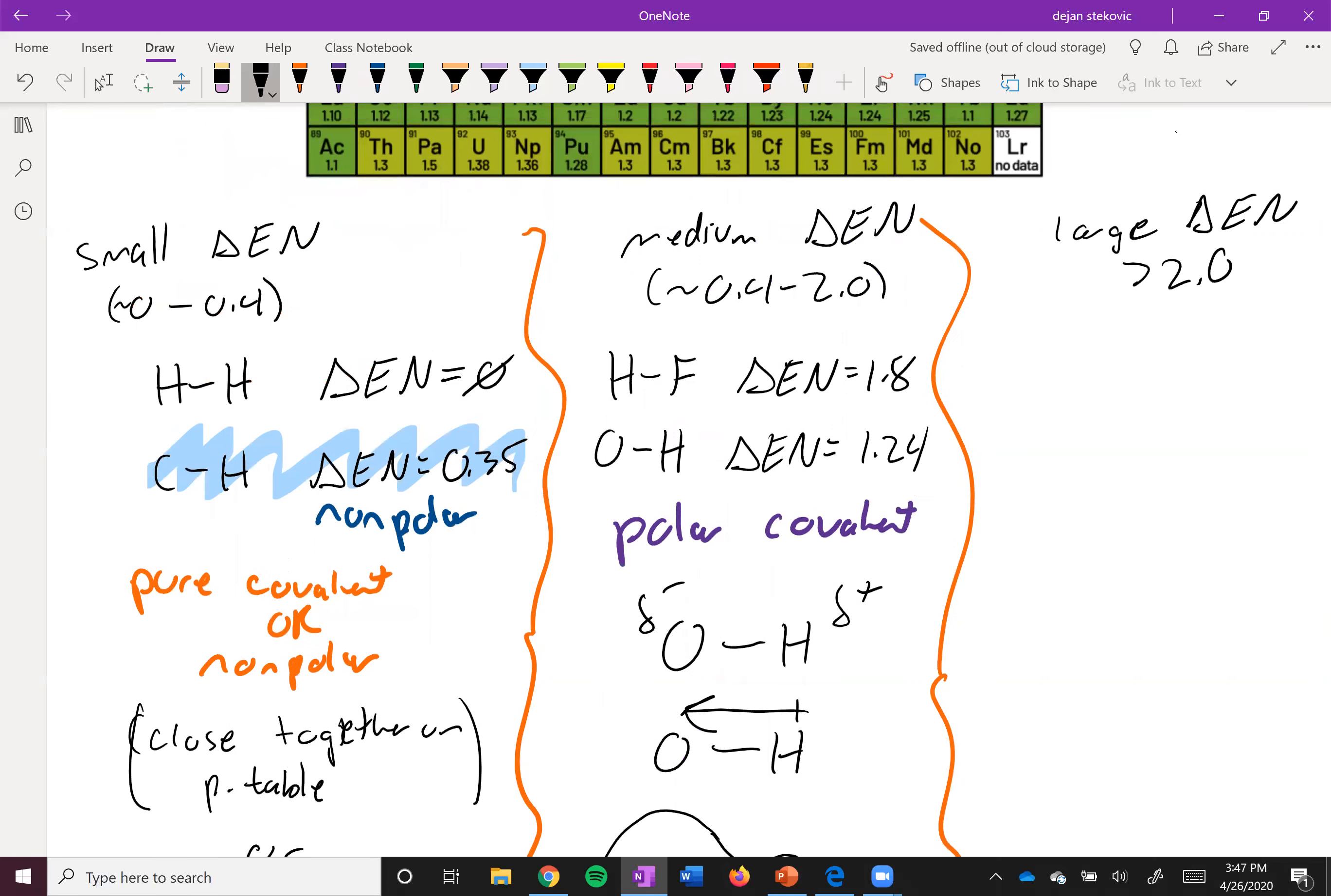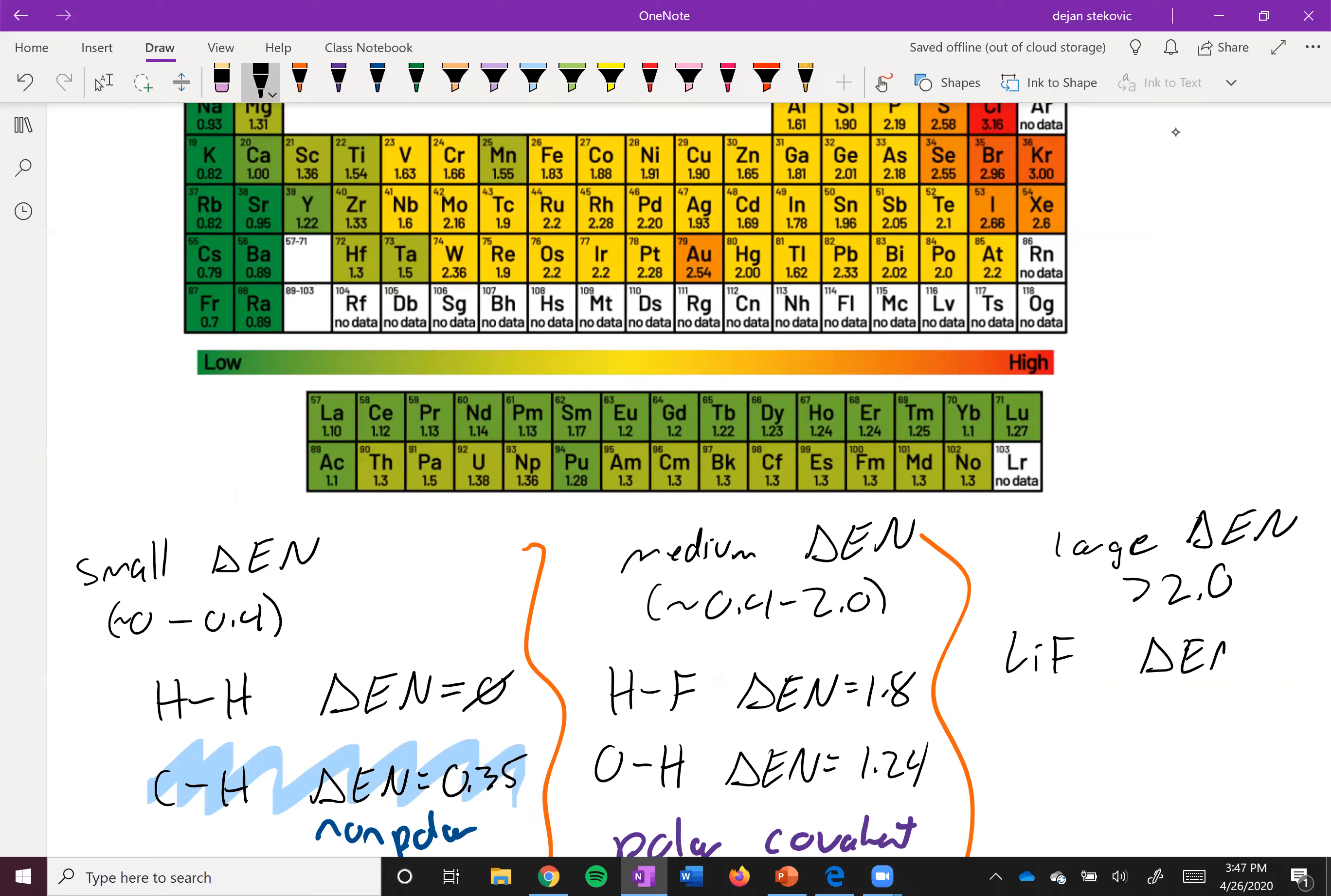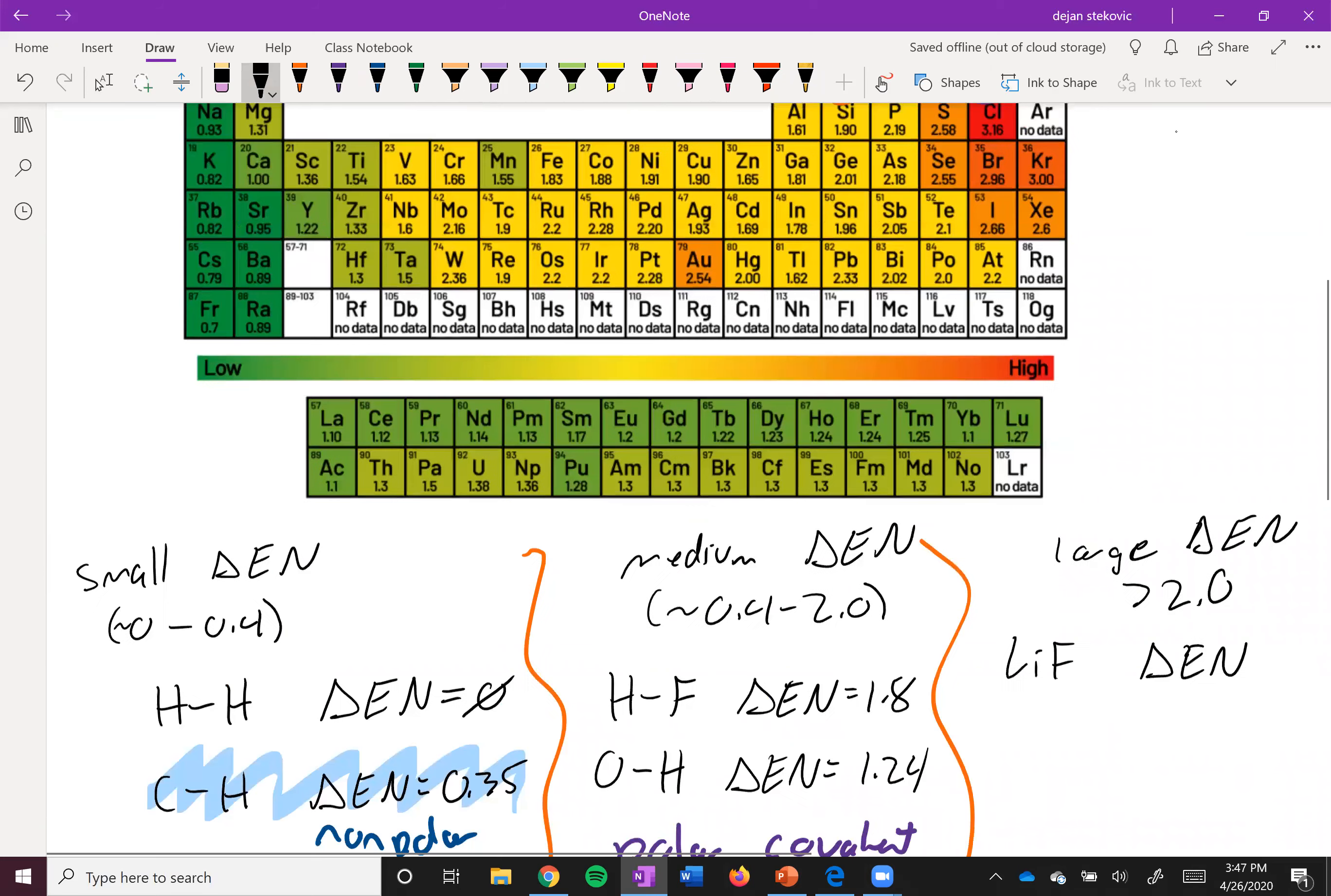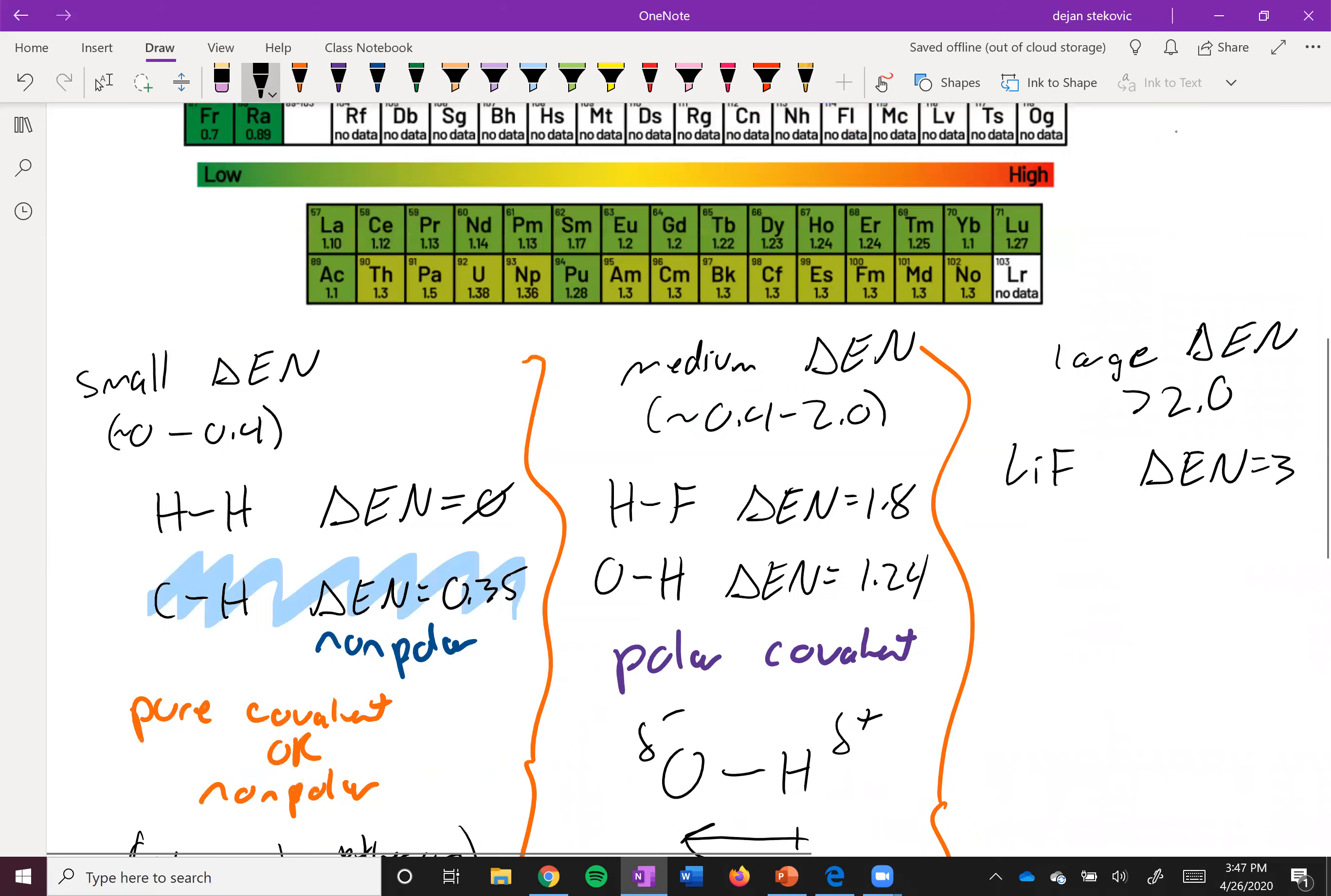And then finally, when we have a very large difference in electronegativity, something like lithium fluoride, right? Lithium's over here all the way on the left. Fluoride is all the way on the right. The difference in electronegativity is about three. So when you get that strong of difference on those electrons, basically one of the atoms just takes the electrons, and then you have an ionic bond. So lithium plus and fluoride minus.